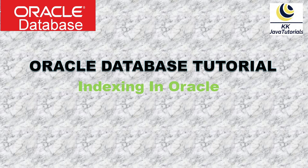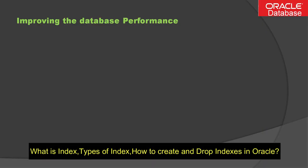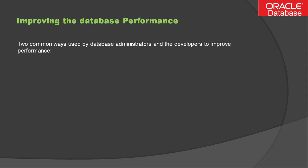When we talk about improving performance in a database, there are two common ways a database administrator or developer can improve performance: first is indexing and second is clustering. In this video series we'll talk about indexing first, and the next video will cover clustering.